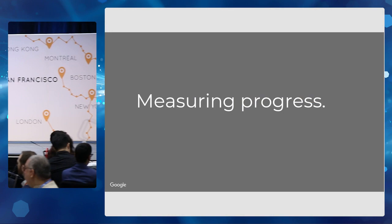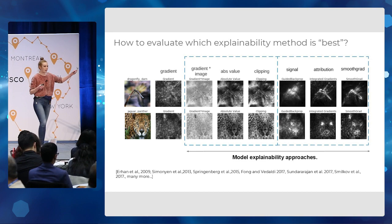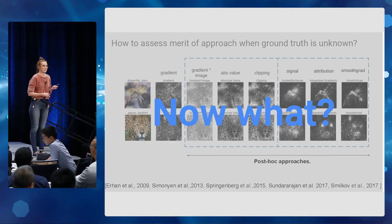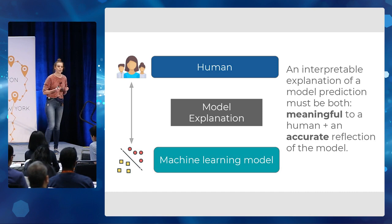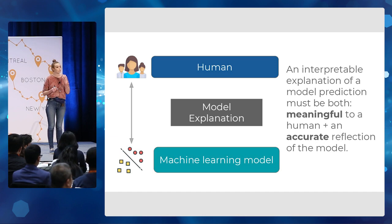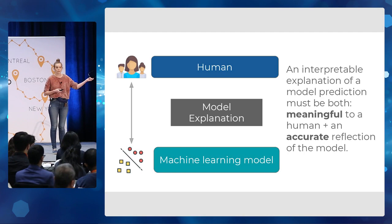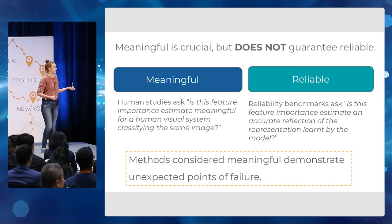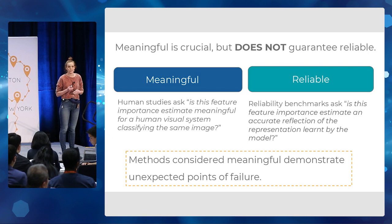Given many different methods trying to do the same thing, how do we choose? We want a method to fulfill two criteria. One is that it should be meaningful to a human — we should gain information from it. The second, which is trickier, is that it should be an accurate reflection of the model — it should be reliable. Measuring whether it's meaningful does not ensure that it's also reliable, and this is key.